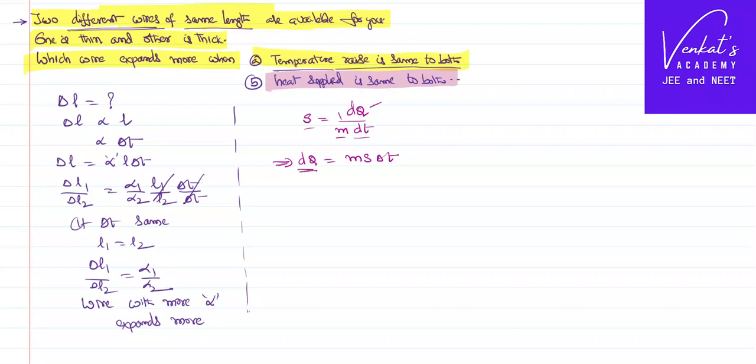But there is no dQ in your rise in length, right? What is the formula that we have? ΔL equals αLΔT. I need a ΔT. From this dQ equals msΔT, I can write ΔT as dQ by ms where m is the mass of the wire material and s is the specific heat of the material.